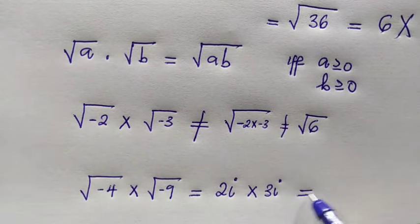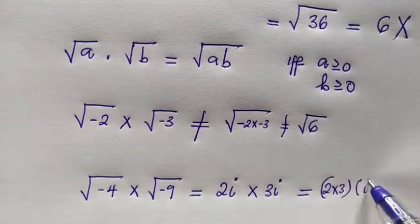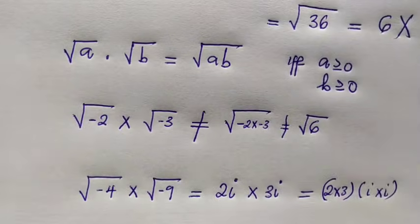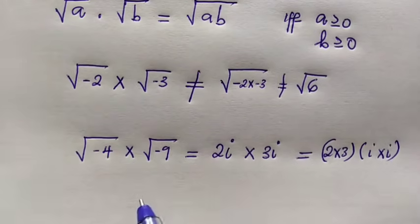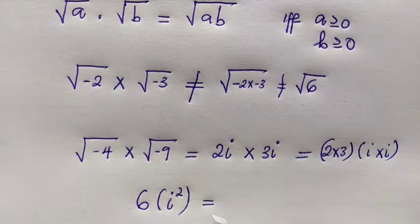And when you multiply this together, we get 2 multiplied by 3 times i multiplied by i. We know i times i is i squared. So we get 6 multiplied by i squared, and i squared is negative 1. Therefore,